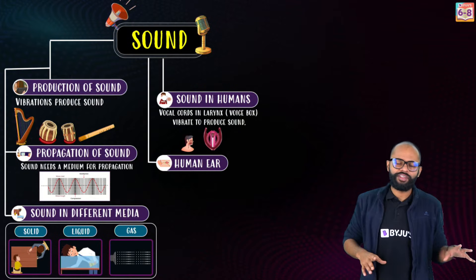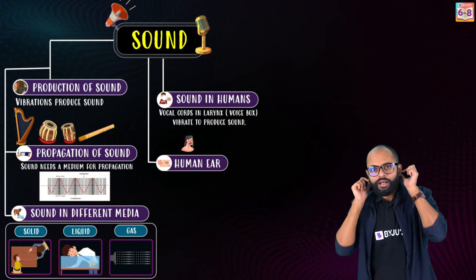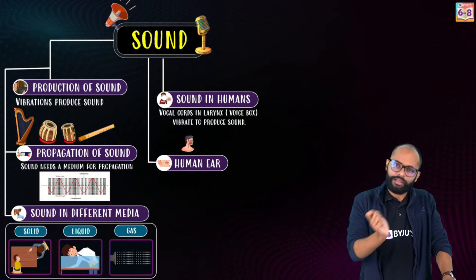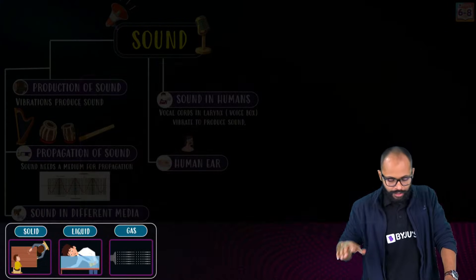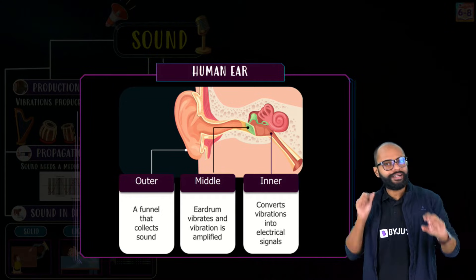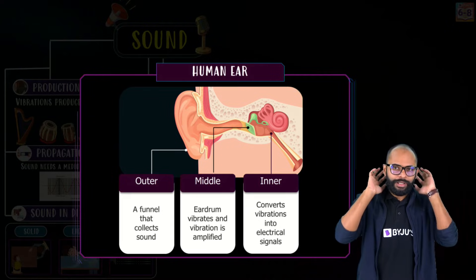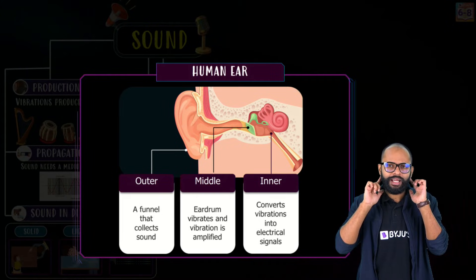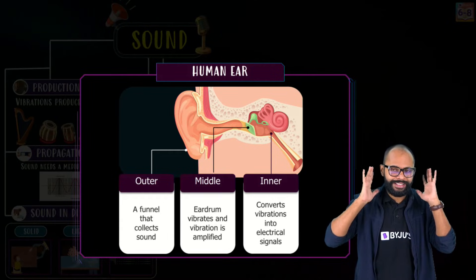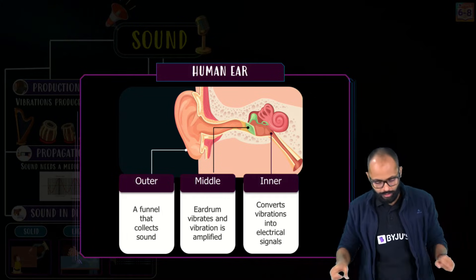Sound is produced and it propagates — but how do we hear it? Through our ears. The human ear has three major parts. The outer part is the pinna, which is shaped like a funnel to collect sound and send it inside the ear. Its job is to collect the sound.